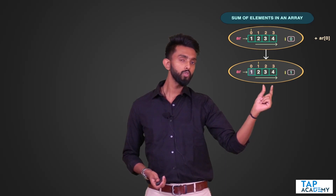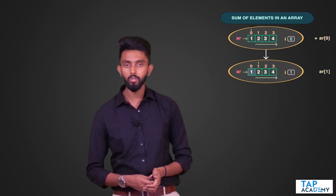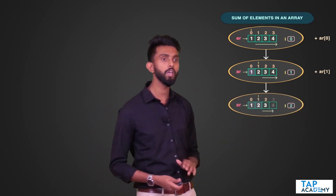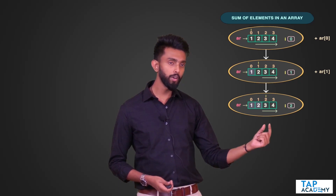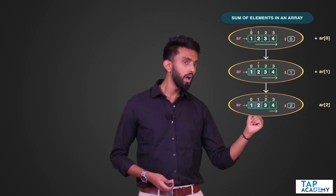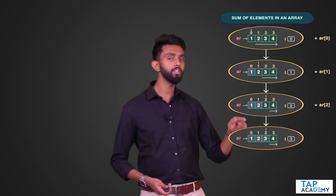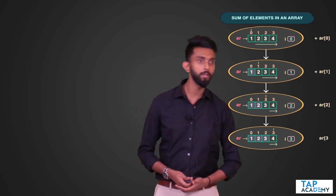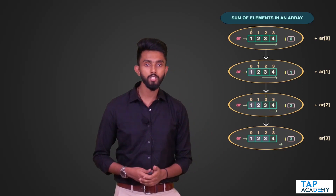I keep AR[I] aside — in this case AR[1] — and call the same function with I incremented to 2. Then AR[2] is kept aside, and I call recursively again with I becoming 3. AR[3] is kept aside. Now I try to break it down further — there are zero elements left, so I increment I to 4.